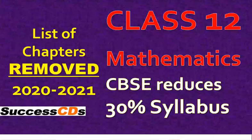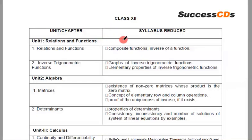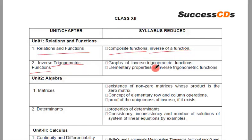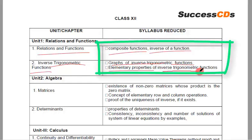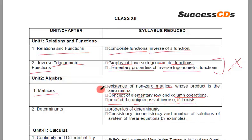Now let us move to the next subject, Mathematics. Let us see chapter-wise what topics have been deleted from class 12 Mathematics. From Relations and Functions: composite functions and inverse of a function are deleted. From Inverse Trigonometric Functions: graphs of inverse trigonometric functions and elementary properties of inverse trigonometric functions are deleted. From Matrices: existence of non-zero matrices whose product is the zero matrix, concept of elementary row and column operations, and proof of the uniqueness of inverse if it exists — all three are deleted.